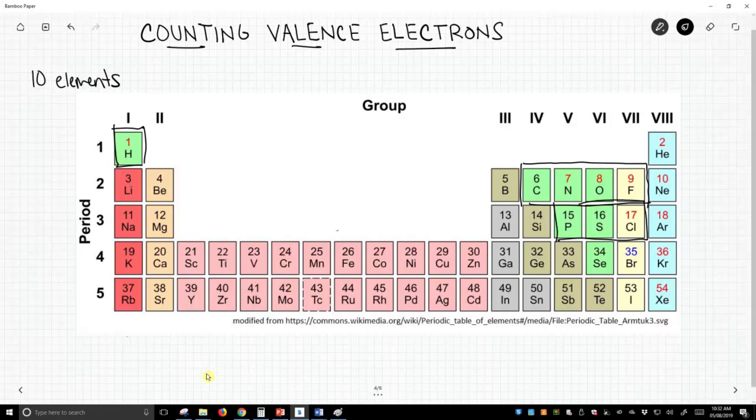Third row elements: phosphorus, sulfur, and chlorine. And then from the fourth and fifth row, we'll pull in the two halogens, bromine and iodine.